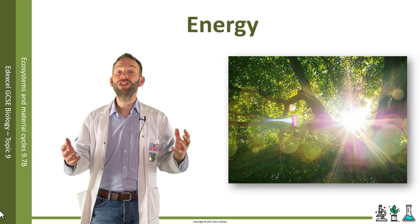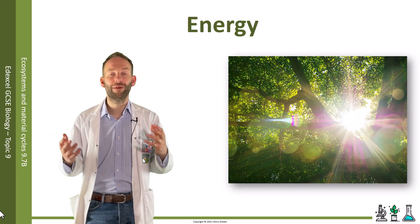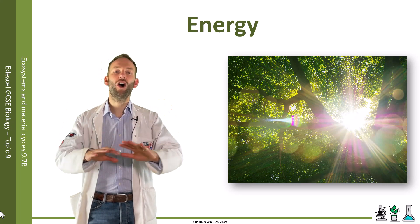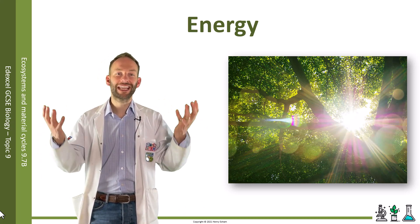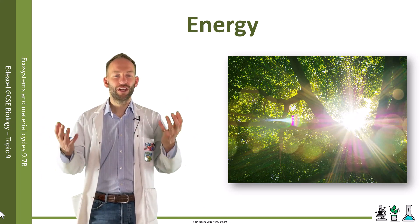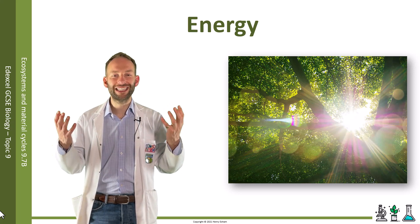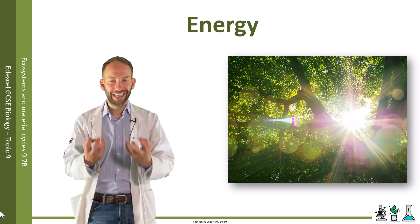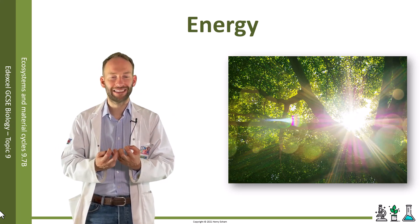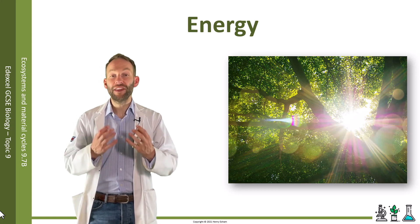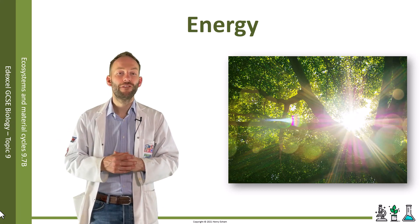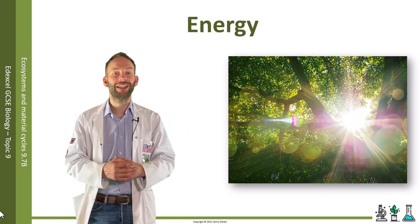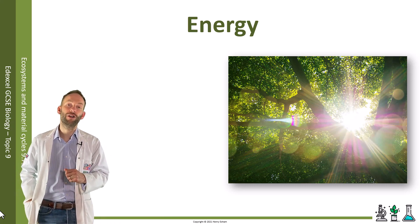The energy that organisms need all comes from the sun. Each year across the whole earth, photosynthesis captures 3 × 10²⁰ joules of energy, which is then stored in plant biomass. This energy can be passed along a food chain — it's either converted to other forms of energy or it's lost to the environment.